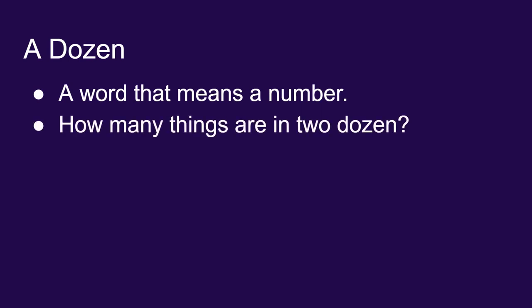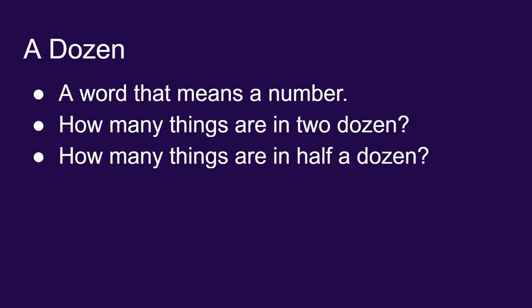The other concept I want to talk about is that of a dozen. A dozen is simply a word that refers to a number. When we say we have a dozen of something, we know that means 12 things. If you have two dozen, that means 24 things. And it's possible to have half a dozen, or six things.